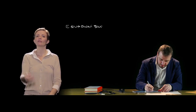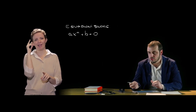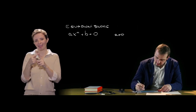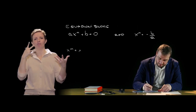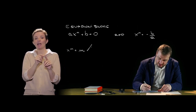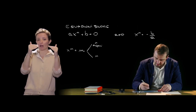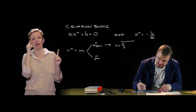Per quanto riguarda le equazioni particolari di grado superiore al secondo, vediamo in primis le equazioni binomie. Sono del tipo ax^n + b = 0, dove n è un numero intero positivo e a, b sono numeri reali con a ≠ 0. Queste possono essere portate nella forma x^n = m. Bisogna distinguere due casi: n dispari e n pari. Se n è dispari, la soluzione è semplicemente la radice n-esima di m.